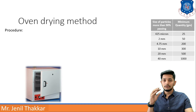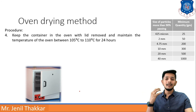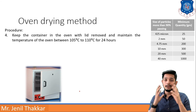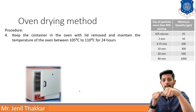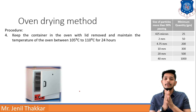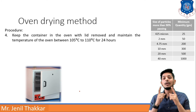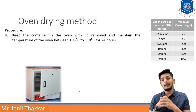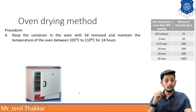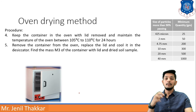Next step: keep the container in the oven with the lid removed and maintain the temperature between 105 to 110 degrees Celsius for 24 hours. The lid must be removed so the moisture gets exposure to heat. You set the oven to 105–110°C and keep the soil inside for one full day — 24 hours.